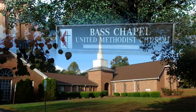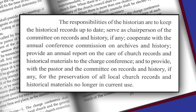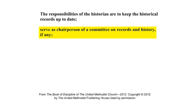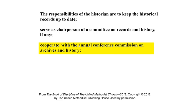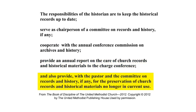Hello, I'm Sandria Williamson. We're here at Bass Chapel United Methodist Church in Greensboro, North Carolina, an old faith community that's been serving the northern end of Guilford County since 1875. This is the first in a series of sessions on the job of a local church historian. Now you're a church historian — what exactly does that job entail? Let's look at the Book of Discipline, paragraph 247, subsection 5. It says the responsibilities of the historian are to keep historical records up to date, serve as chairperson of the Committee on Records and History if any, and cooperate with the Annual Conference Commission on Archives and History. The historian should provide an annual report to the charge conference and provide for the preservation of church records and historical materials no longer in use.